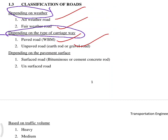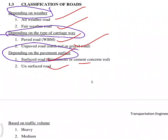Unpaved road is compacted by pavement. I will classify the pavement surface. There is a pavement surface road, there is a cement concrete road, there is a surface road and an unsurfaced road. Depending on the type of carriageway, that is paved or unpaved, depending on the pavement surface road.